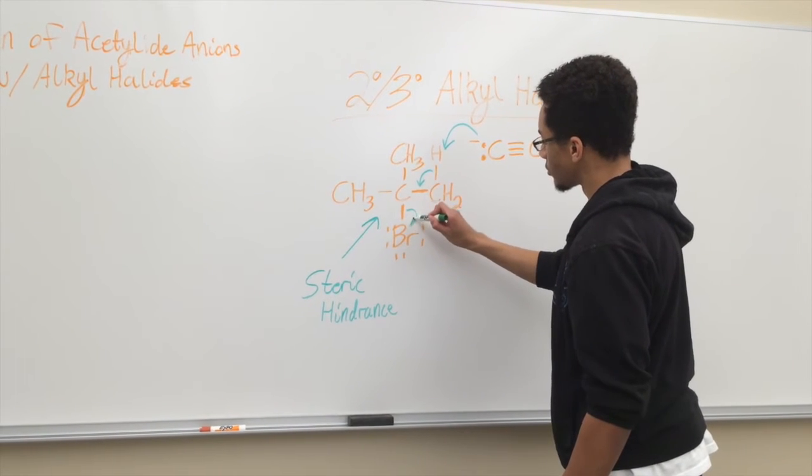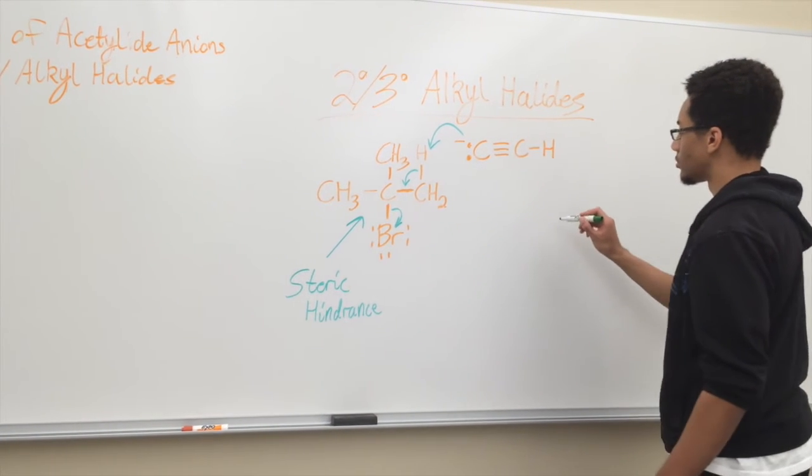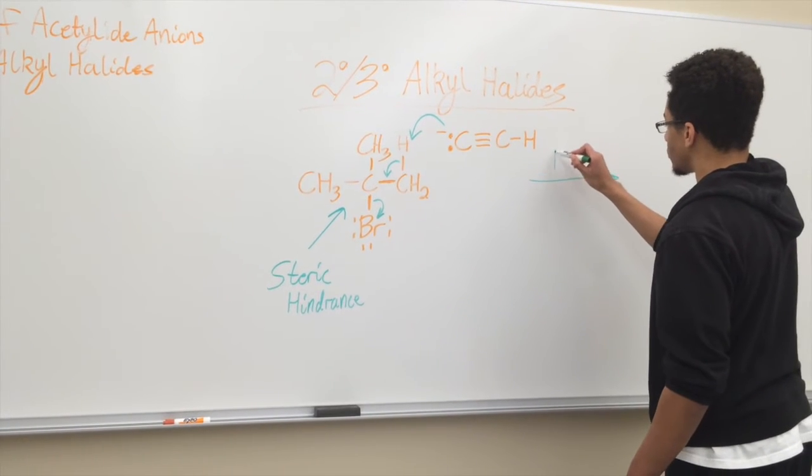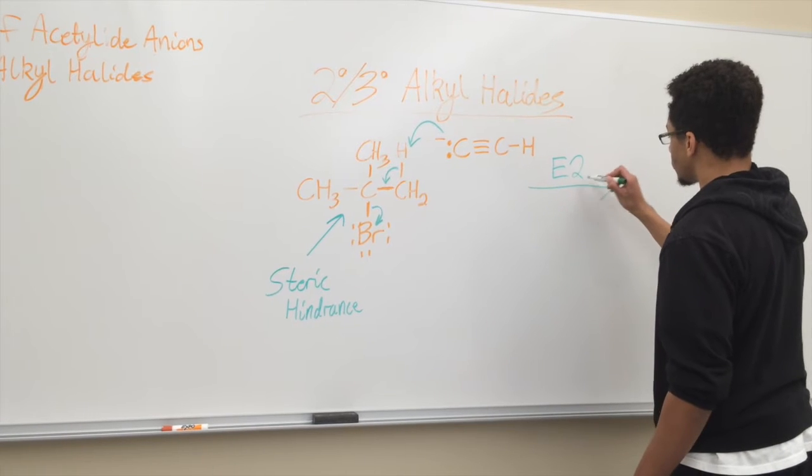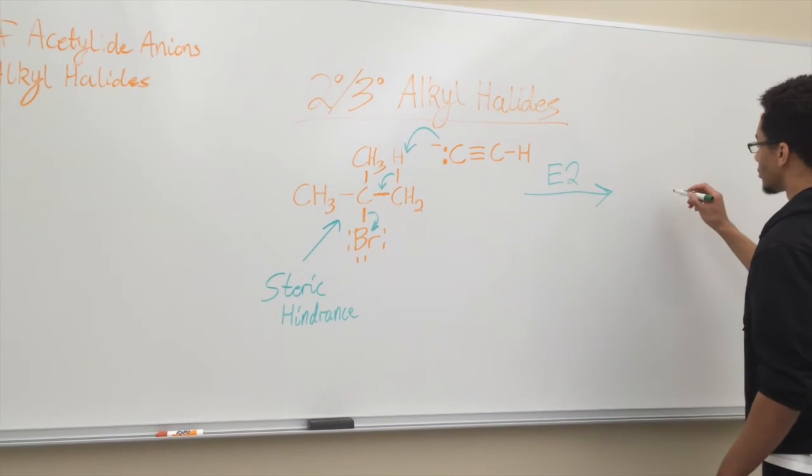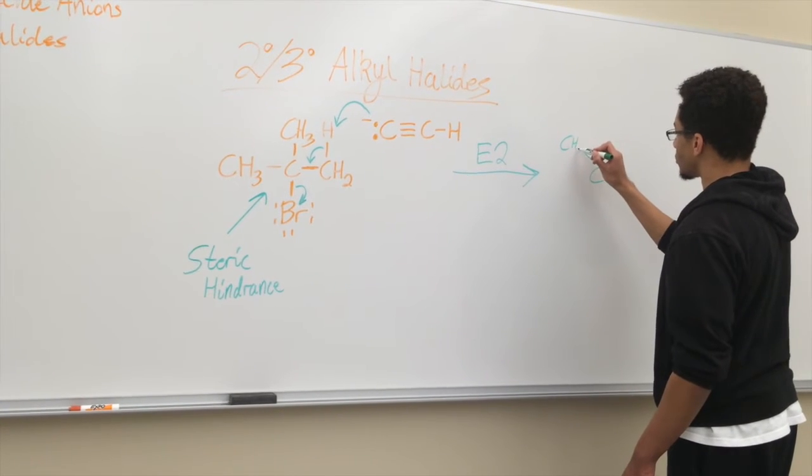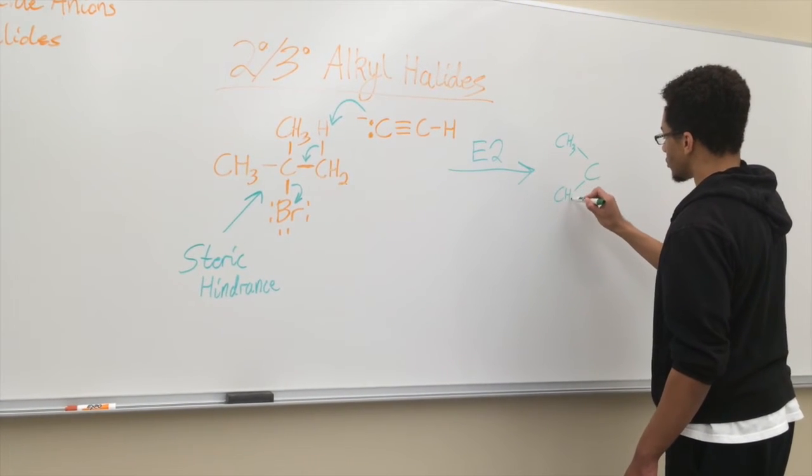It's going to take an H off of beta carbon and allow a double bond to form as our halogen leaves as our leaving group. This is a simple E2 reaction, so we'll get three products in total, which means we're getting a lesser yield of carbon-carbon bonds compared to the SN2 reaction.